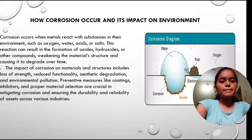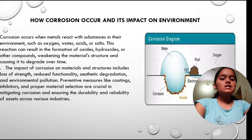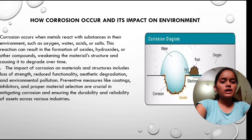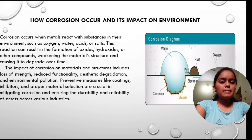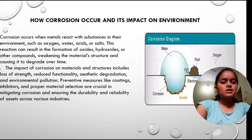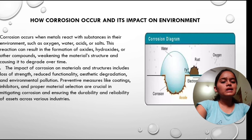How corrosion occurs and its impact on the environment: corrosion occurs when metals react with substances in their environment such as oxygen, water, acids or salts. This reaction can result in the formation of oxides, hydroxides or other compounds, weakening the material structures and causing it to degrade over time. The impact includes loss of strength, reduced functionality, aesthetic degradation and environmental pollution. Preventive measures like coatings, inhibitors and proper material selection are crucial in mitigating corrosion and ensuring the durability and reliability of assets across various industries.